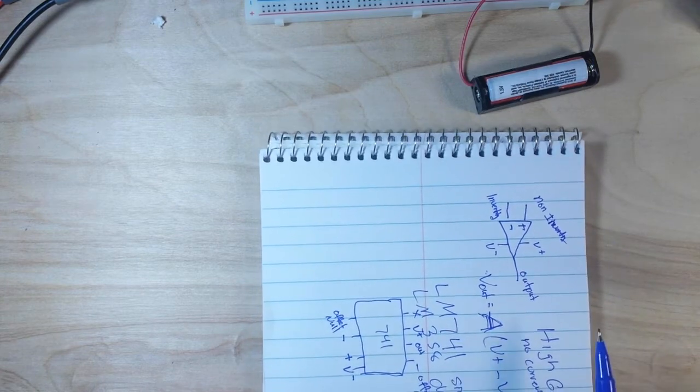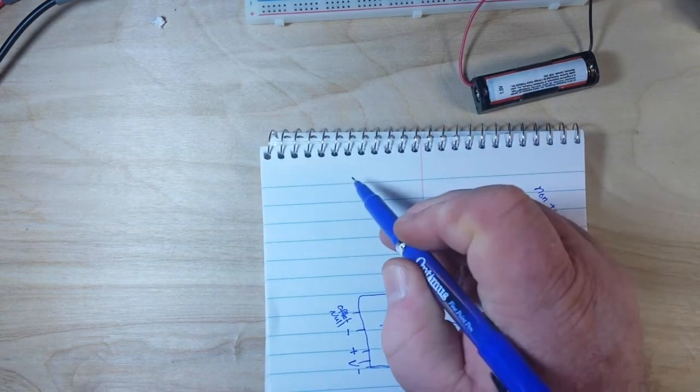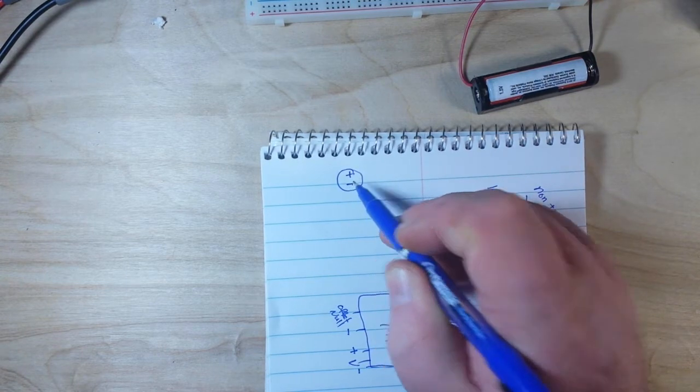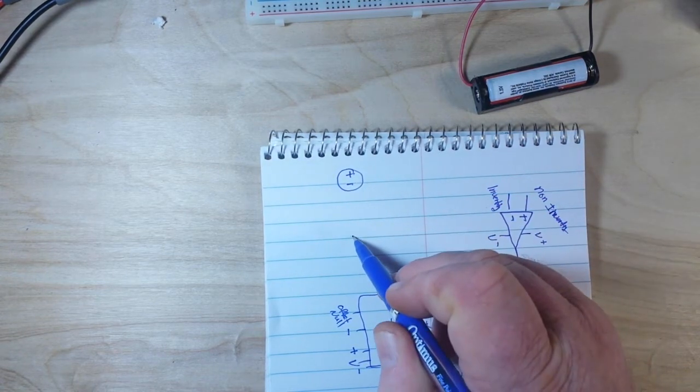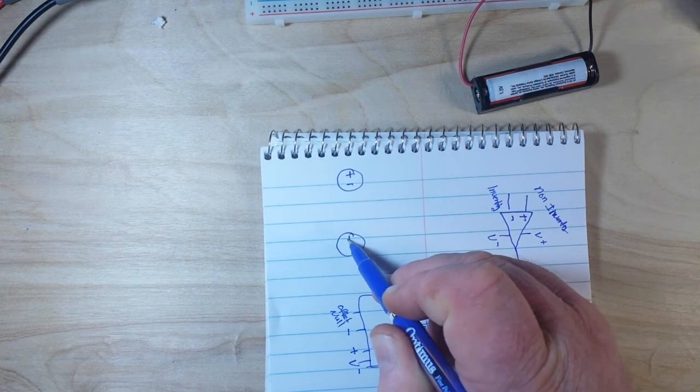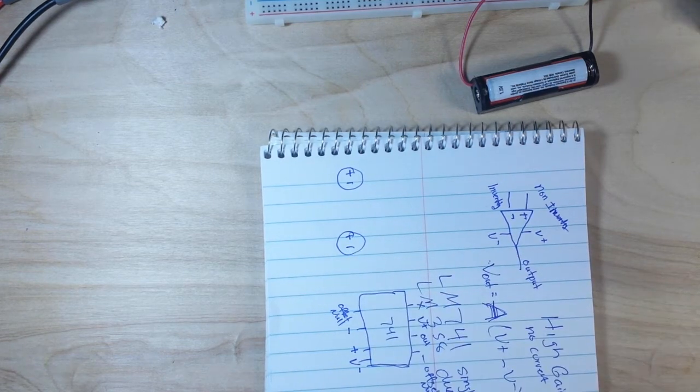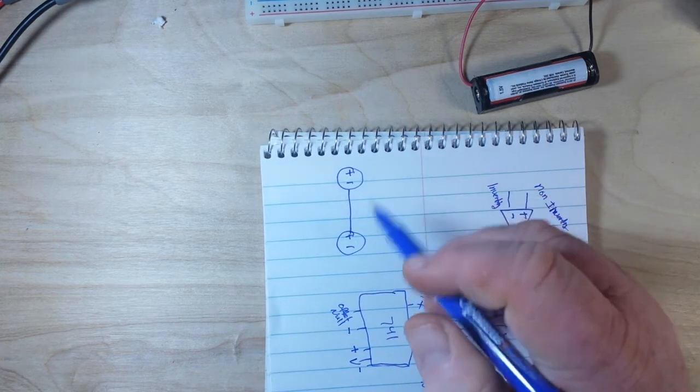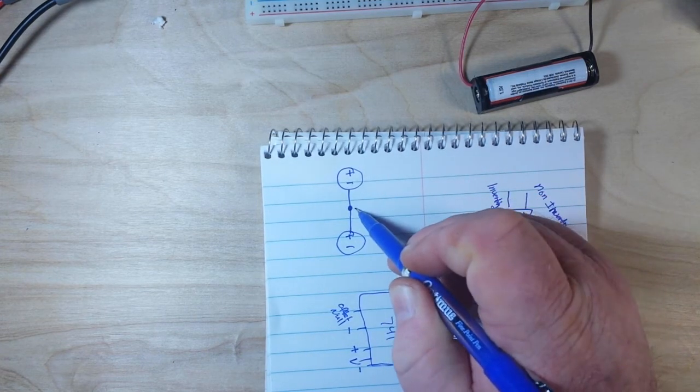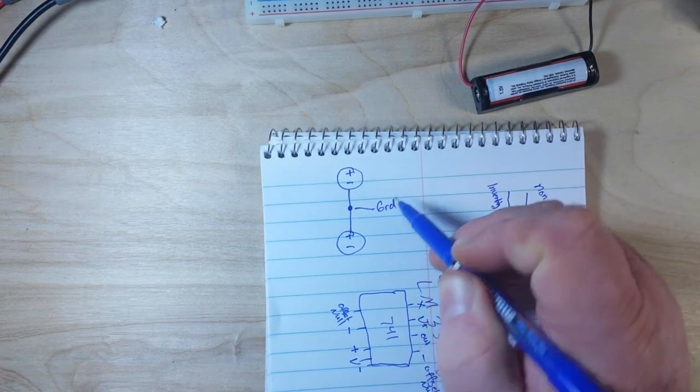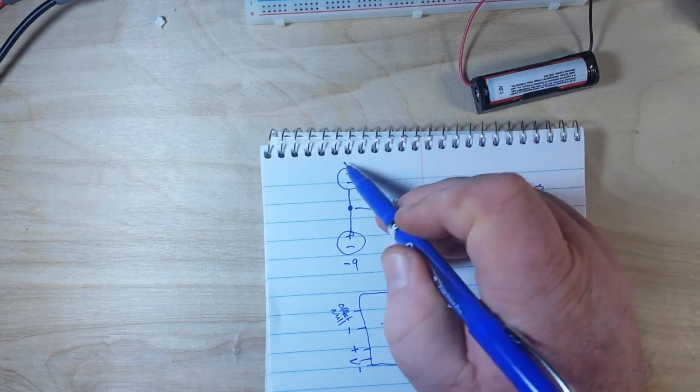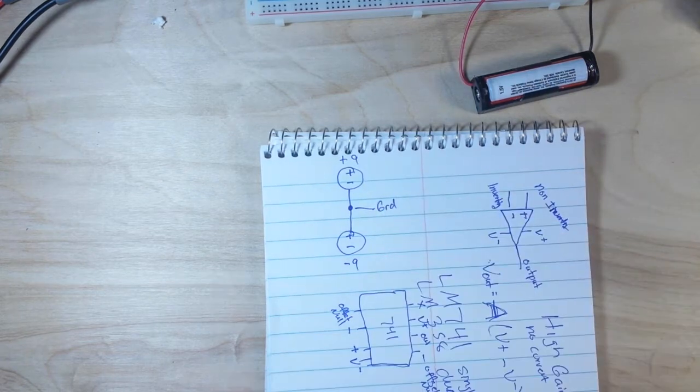So we have one voltage source here, we have one voltage source here. We connect them together. This point here is ground, this point here is minus nine volts, and this point here is plus nine volts. So that's how we get our dual supply.